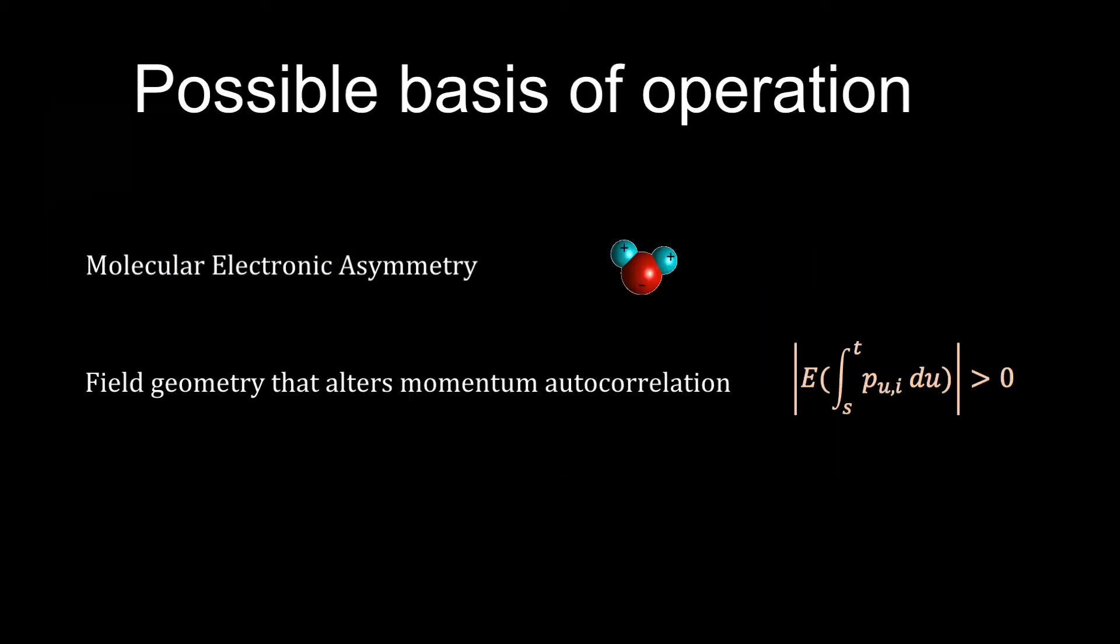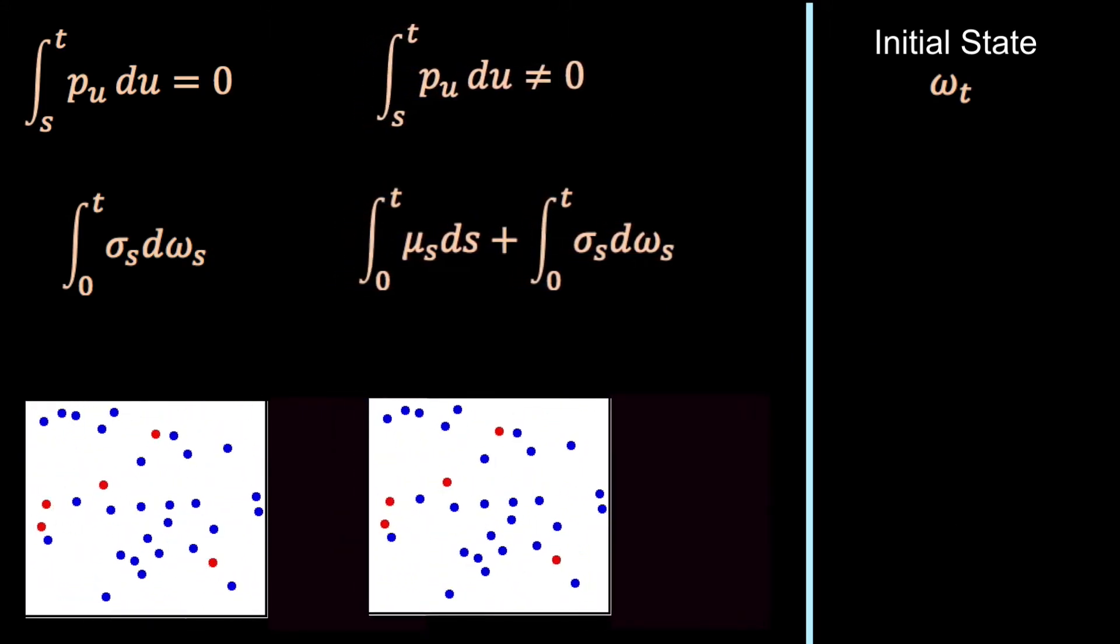Specifically, molecular and electronic asymmetry, field geometry that alters momentum autocorrelations, and the field geometry that maintains the ensemble symmetry can result in motion.